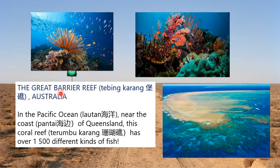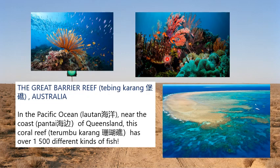The Great Barrier Reef, Australia. In the Pacific Ocean near the coast of Queensland, this coral reef has over 1,500 different kinds of fish.